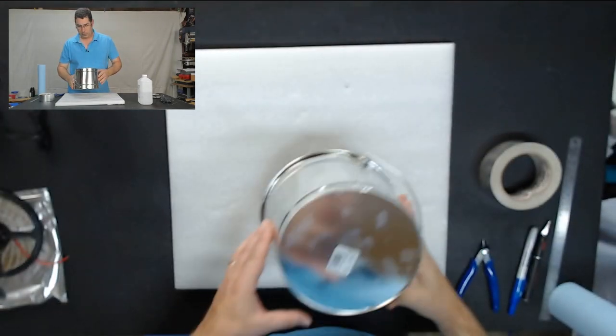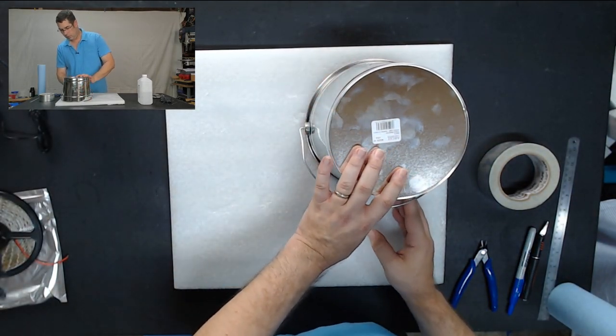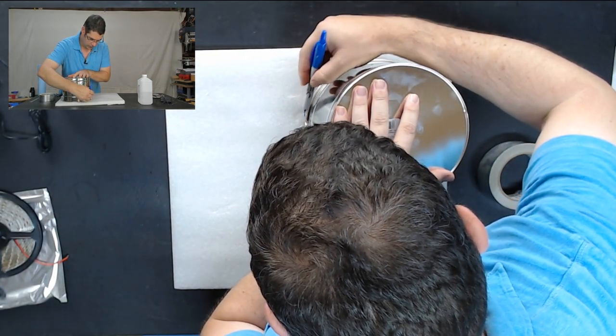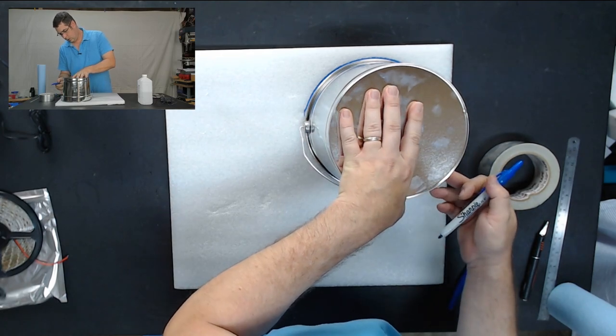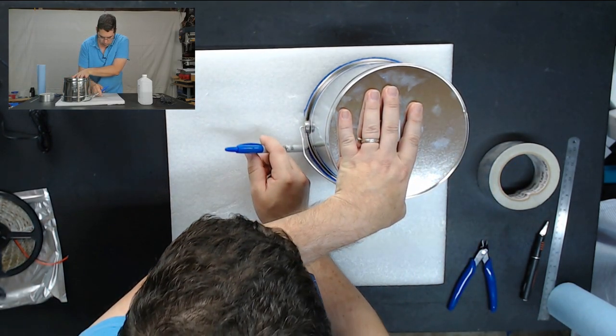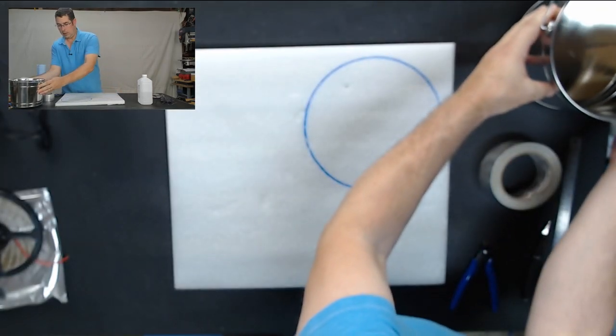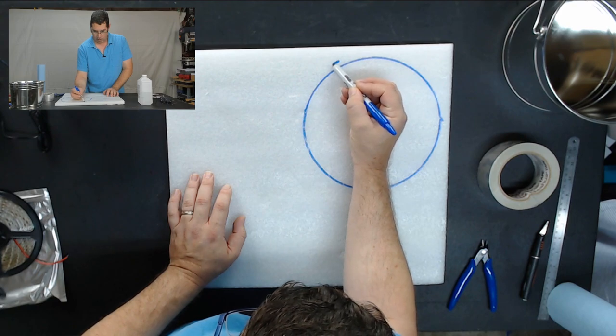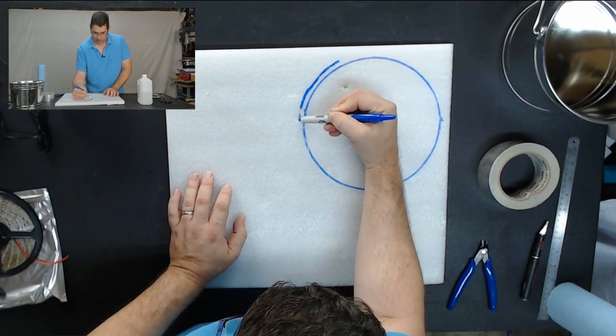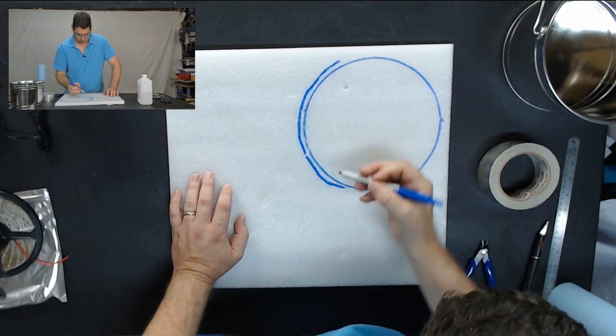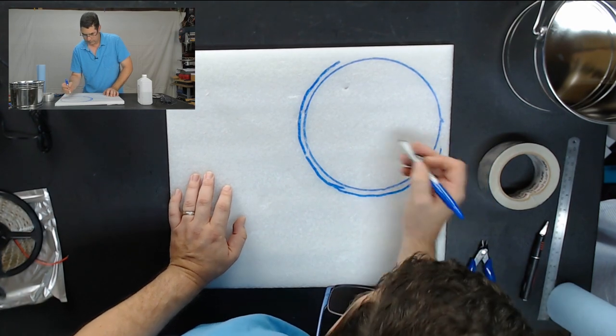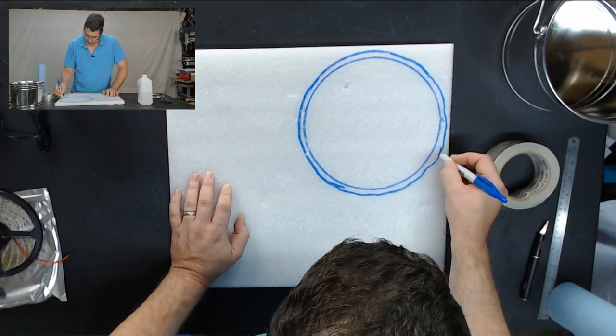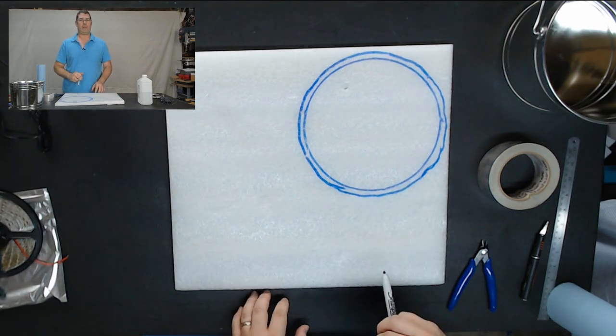I'm going to start off by putting the bucket here upside down onto the foam in a generally good area. I am going to go ahead and use a sharpie to trace out the bucket here. And then I'm going to go ahead and freehand. So that is our outside diameter. And I'm going to go ahead and freehand this about roughly a centimeter bigger than the inside circle. Then I'm going to go ahead and take a razor knife and cut this out.